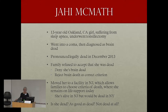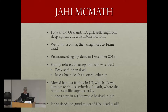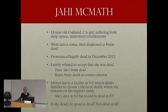The case study is Jahi McMath, who at age 13 in Oakland, California was suffering from sleep apnea and underwent a tonsillectomy. She seemed to recover okay, but then she started bleeding, went into a coma, and was diagnosed as brain dead. She was pronounced, in accordance with California law, legally dead in December 2013. Her family refused to accept this on two grounds: they think she was misdiagnosed and not brain dead, and they also suspect the hospital was trying to cover up negligence. It was a terrible situation — a 13-year-old girl goes in for a tonsillectomy and the next thing they know she's dead.